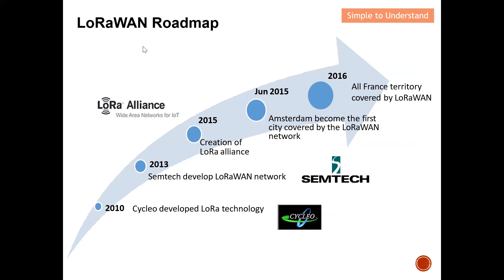Let's start by discussing the LoRaWAN roadmap. This diagram shows the LoRaWAN roadmap. I want you to feel how this technology took off: in 2010, a company called Cycleo developed LoRa technology. Semtech actually bought Cycleo for five million dollars, and later Semtech developed the LoRaWAN network. In 2015, Semtech created the LoRaWAN Alliance, and currently there are more than 330 members on board. In 2015, the first city became fully covered by LoRaWAN network, and a year later all of French territory was covered.